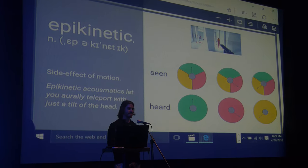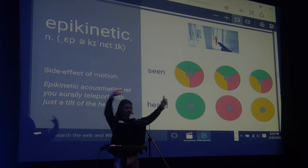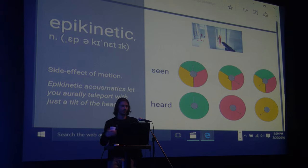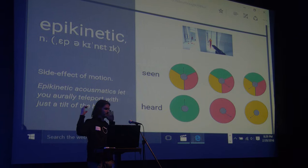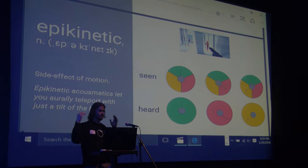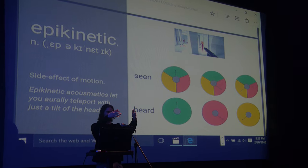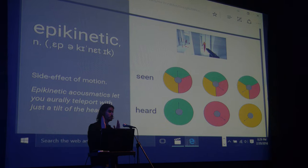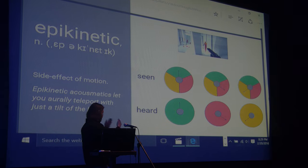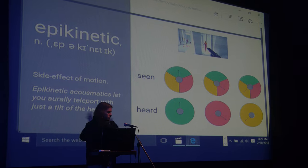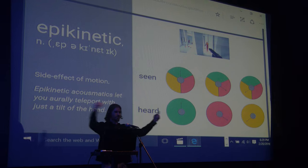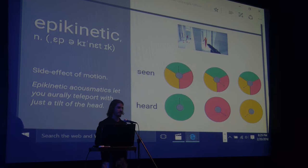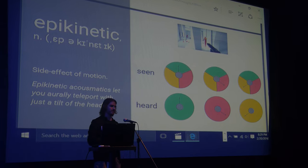Total Cinema 360 has a demo where the soundscape you're surrounded by changes depending on where you turn. The visual field is divided into three sections. When you're facing the rock concert, all you hear around you is rock music. Even though you know when you look over here you're going to see a nature vista, and at that time, nature will be all you hear all around you. So that's an example of epikinetic sound.